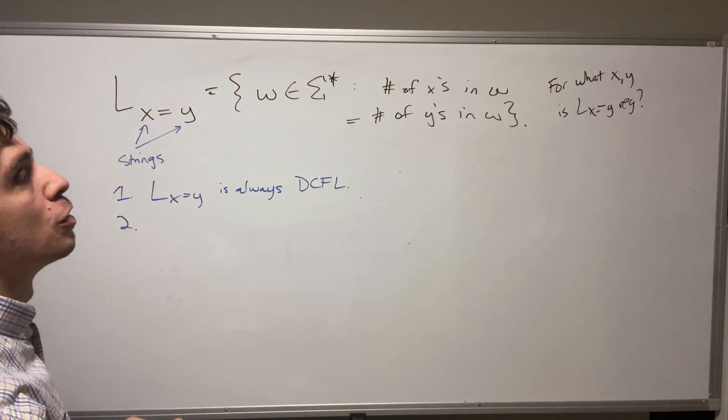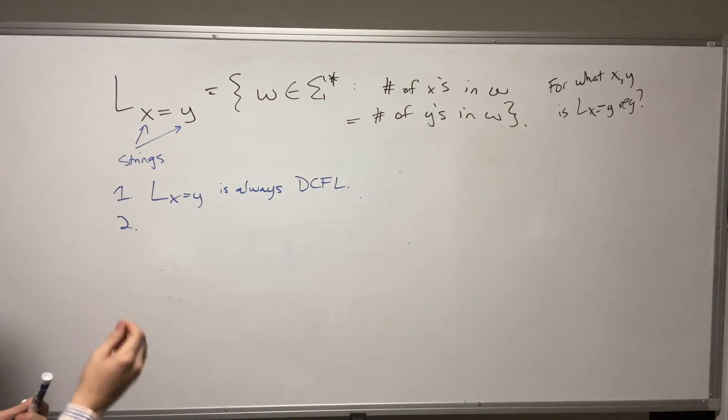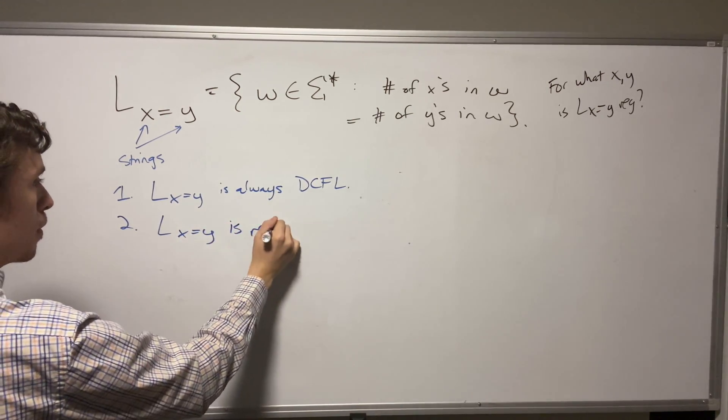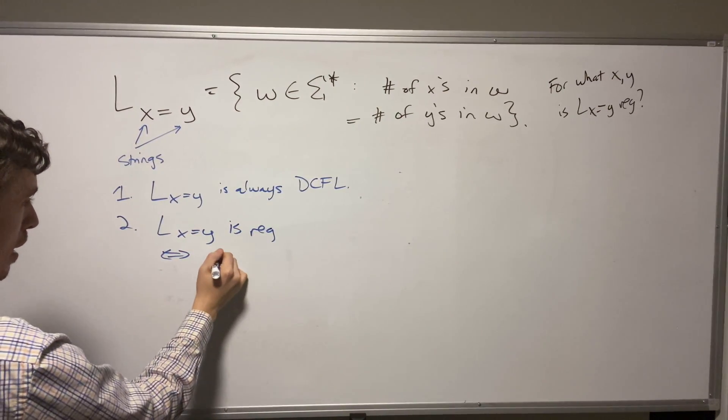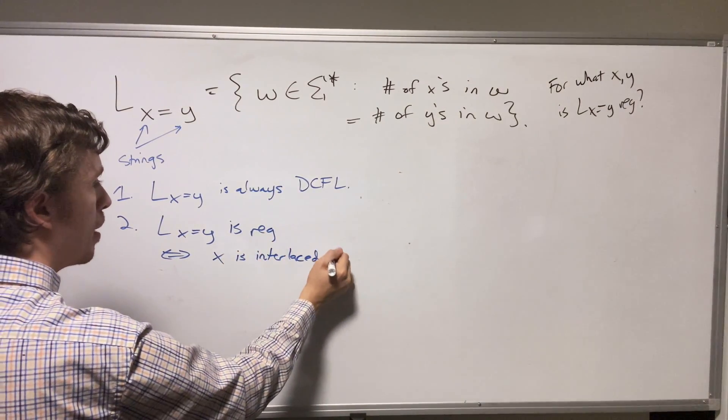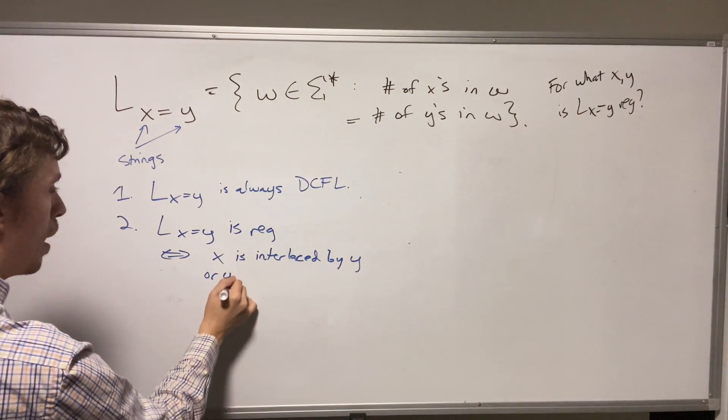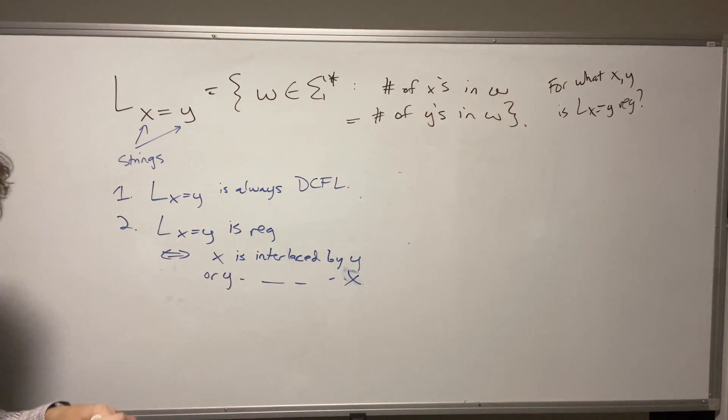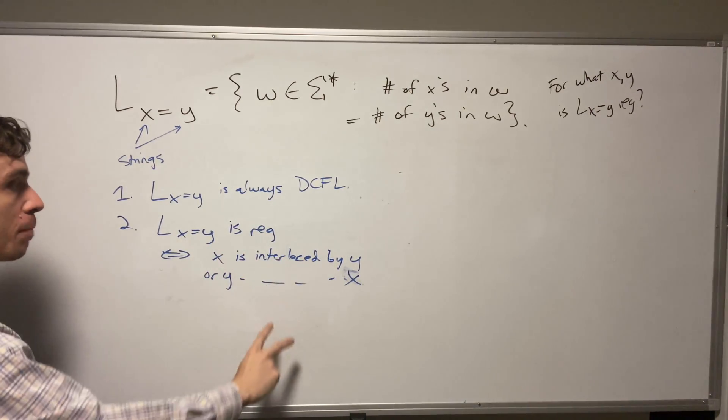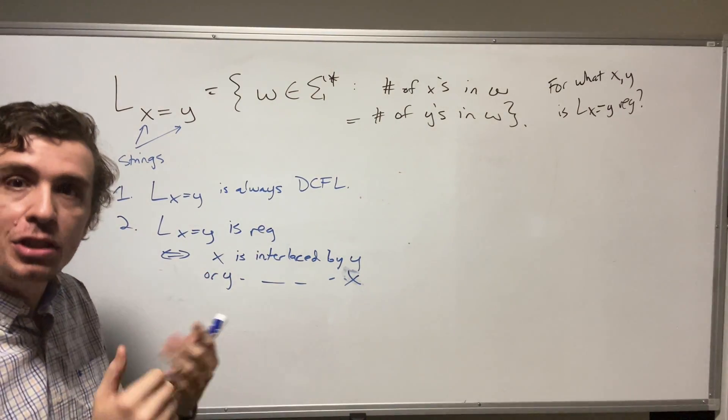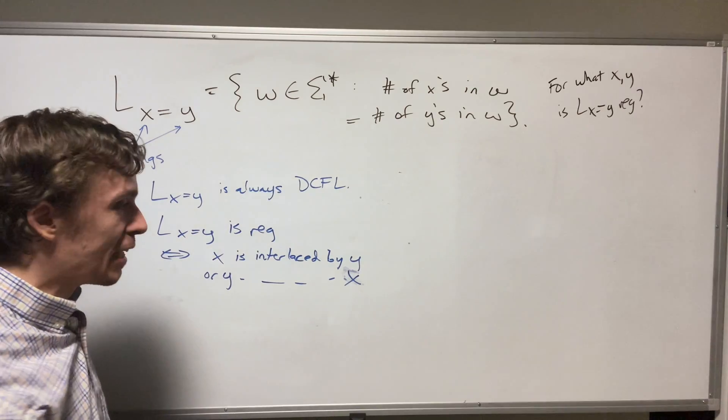But going back to the original question, when is it actually regular? It's actually a very nice answer so that it is regular if and only if X is interlaced, and I'll define what that means in a second, by Y or Y is interlaced by X. And that's the if and only if condition. So if this thing is regular, then one of these two must happen. And if one of these two happens, then it's regular. So we have a necessary and sufficient condition for which it's regular. So what does interlaced mean?